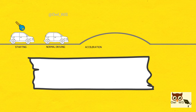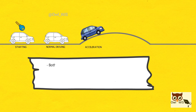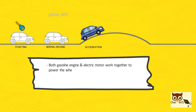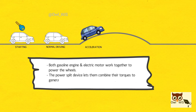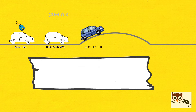Acceleration. When you need to go faster, both the gasoline engine and electric motor work together to power the wheels. The power split device lets them combine their torques to generate more speed.